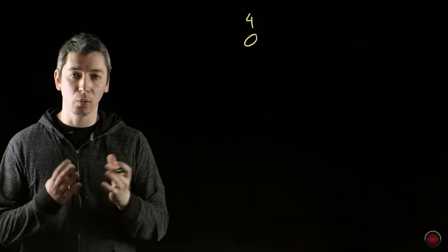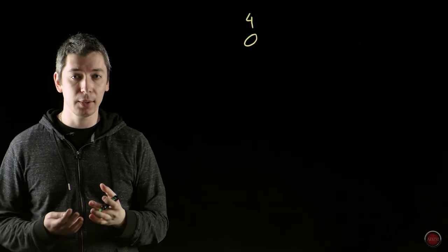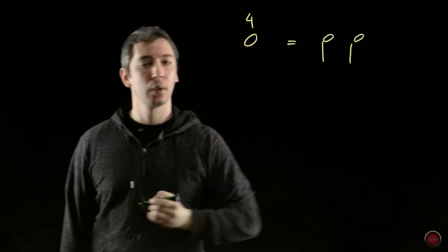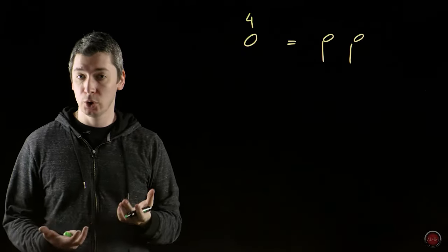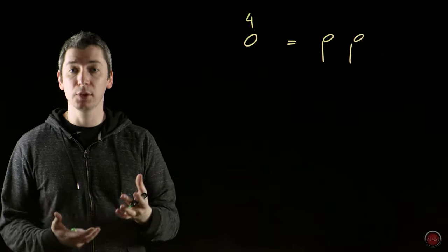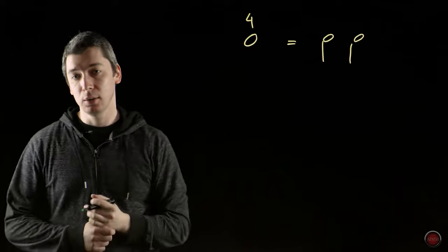Now, in order to fill out the same time with another note values, I can write two half notes. Each half note represents two beats, which means if I combine them, they will give me nothing else but four beats, which is an entire whole note.